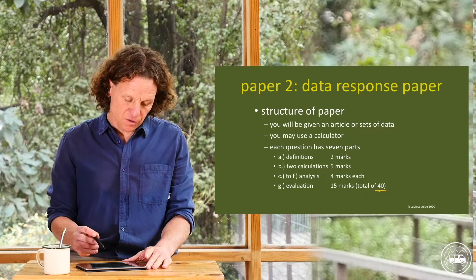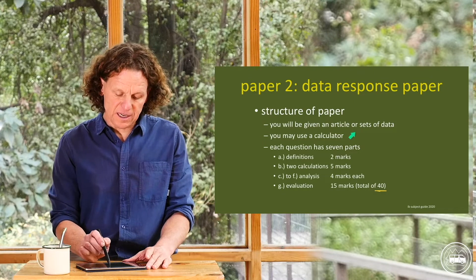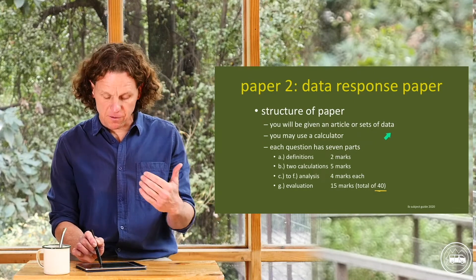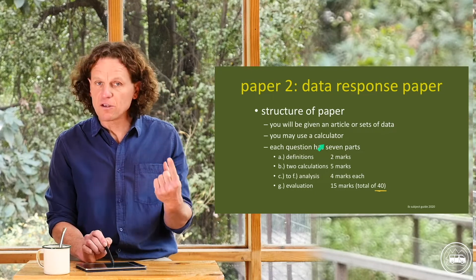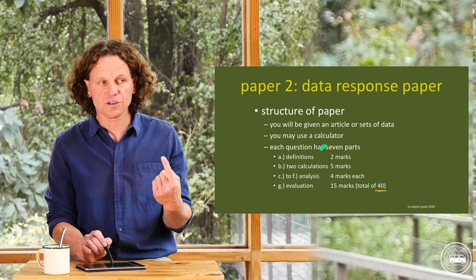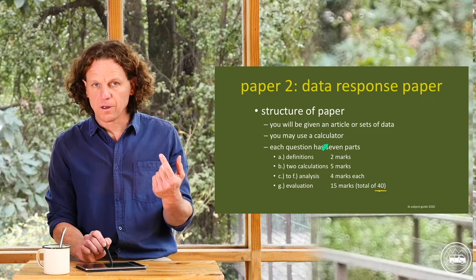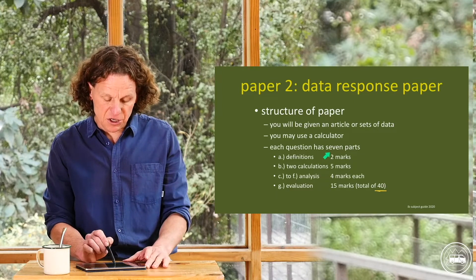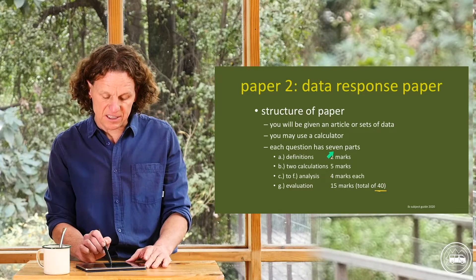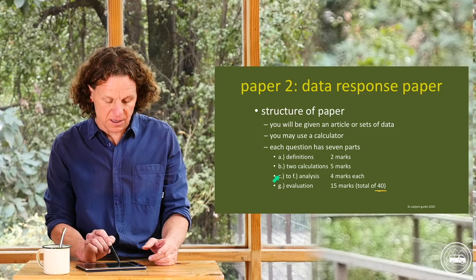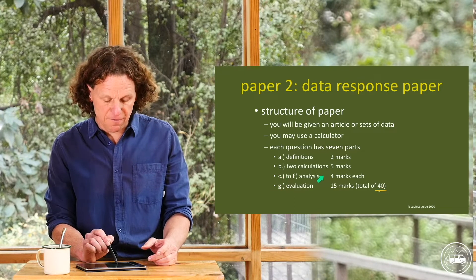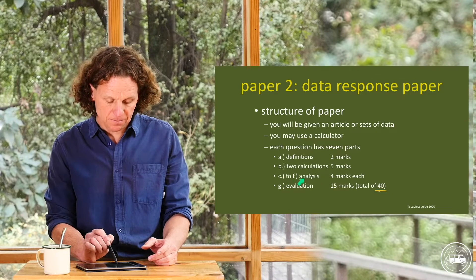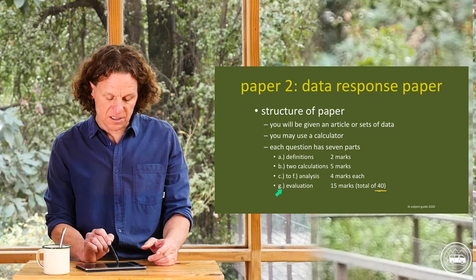You'll be given an article or sets of data from which you construct your answer. You may use a calculator because you're going to have to do calculations for part B. Each question has seven parts: A, B, C, D, E, F, and G. Questions C, D, E, and F are all similar — they're analysis questions. Part G is an evaluation.